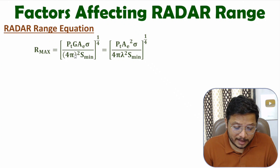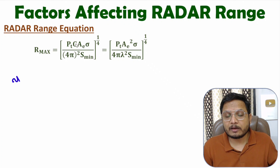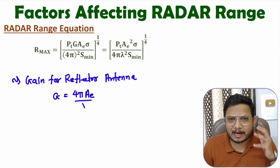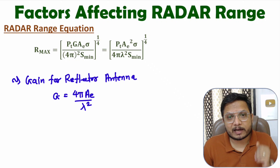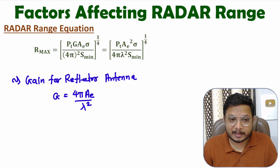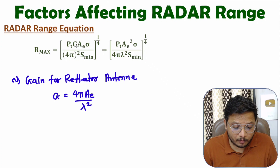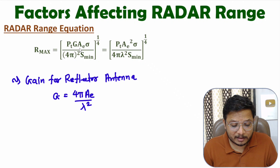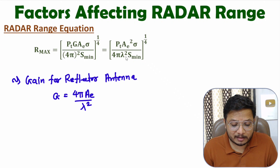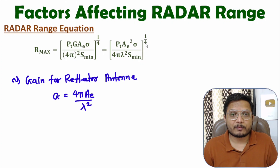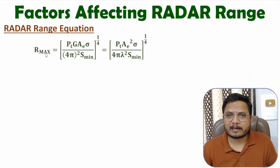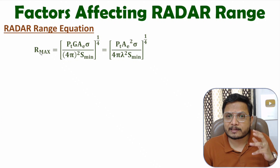In this equation we have G, the gain of antenna. With radar systems we usually use a parabolic reflector antenna. For a parabolic reflector antenna, gain is G = 4π × AE / λ². Substituting this into the radar range equation, it simplifies to R_max = (PT × AE² × σ) / (4π × λ² × S_min) raised to 1/4. Based on this equation, you can easily understand the different factors affecting radar range.